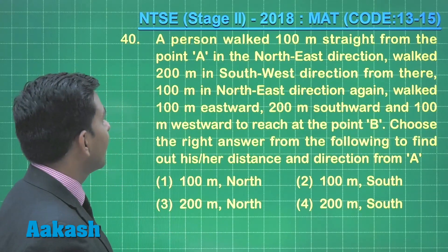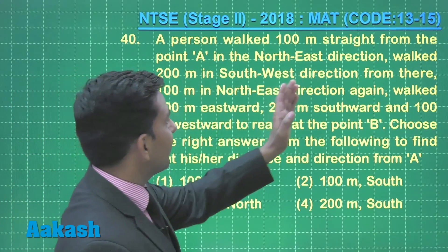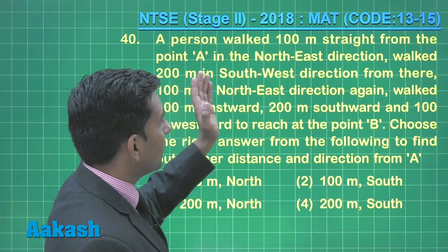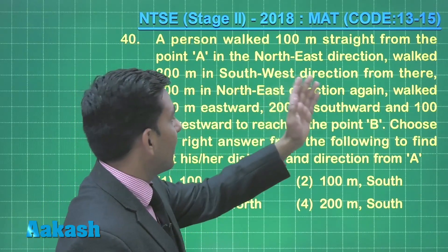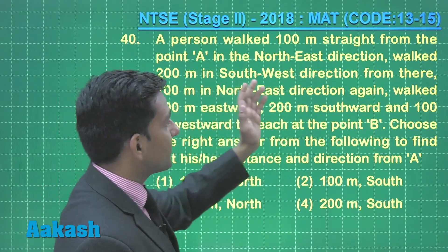Now let's take question number 40. A person walked 100 meters straight from the point A in northeast direction and walked 200 meters in southwest direction from there.